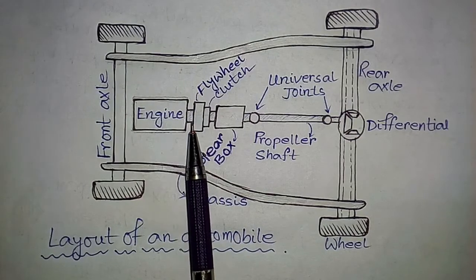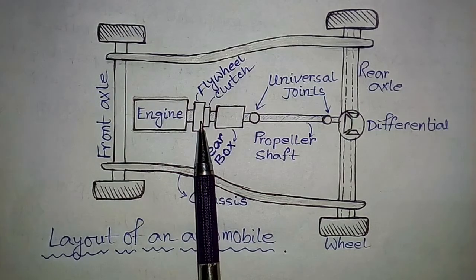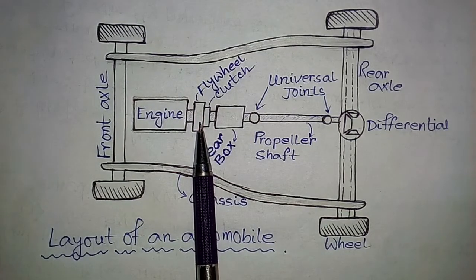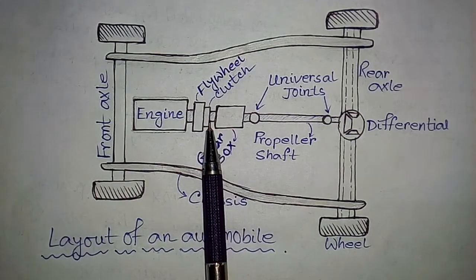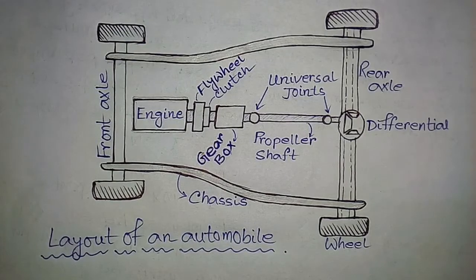From engine, power is transferred to the flywheel, then to the gearbox via clutch. The clutch and gearbox are known as the transmission system. The clutch engages and disengages the gearbox with flywheel, and the gearbox shifts the torque up and down as per our requirement.